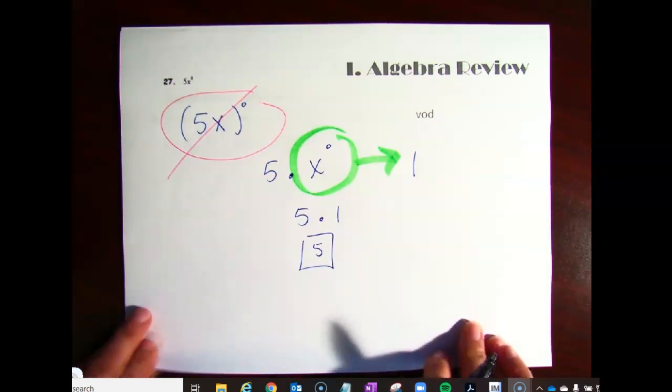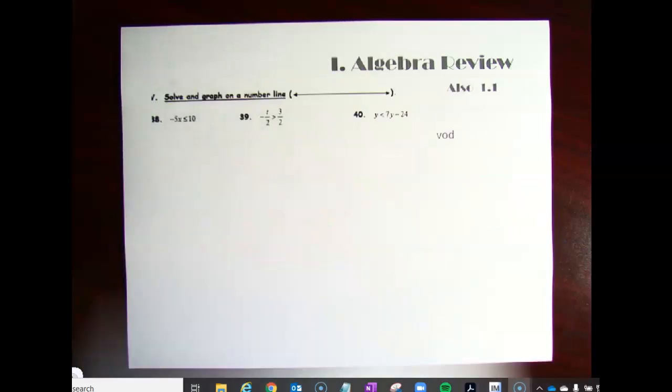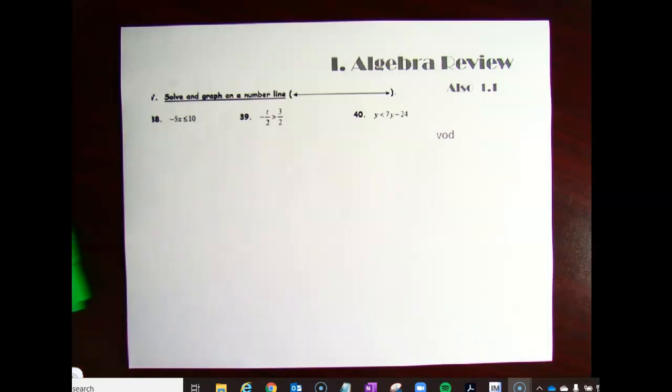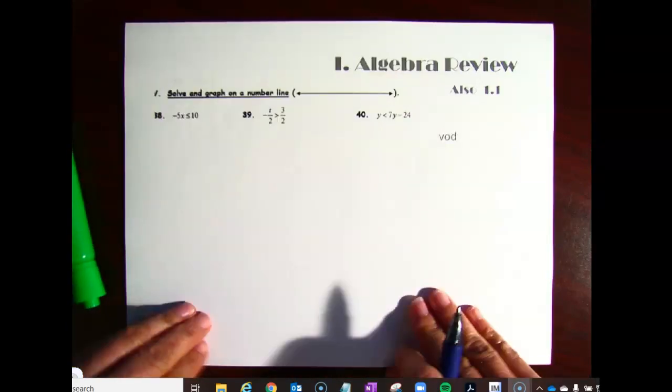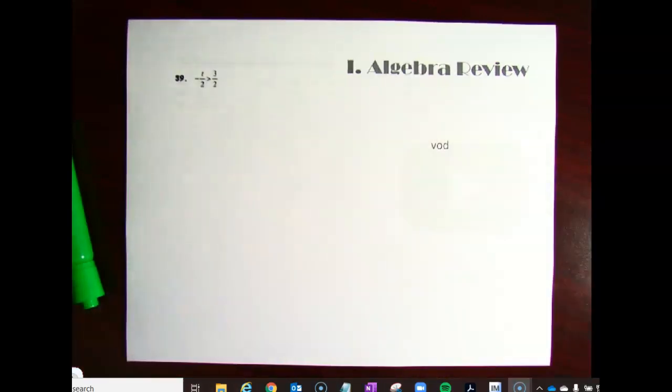So that was our Algebra Review. The next part we're going to talk about is going to be graphing on a number line. So this is certainly where your graph paper is going to come in handy for these problems. Specifically, I am going to look at number 39. So on number 39, it almost appears that it is a proportion. But of course, we have an inequality symbol. I want to show you how I work inequalities when I have a negative variable.